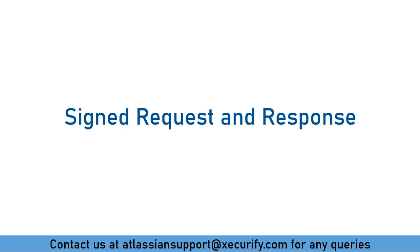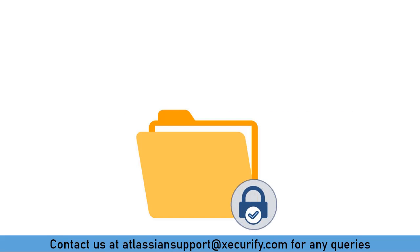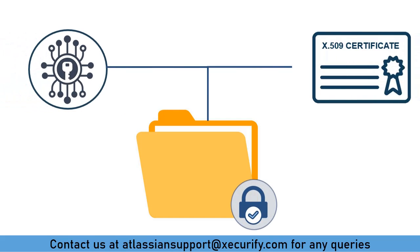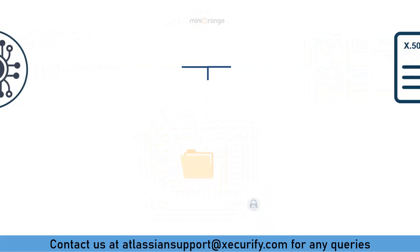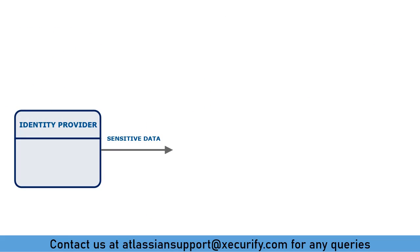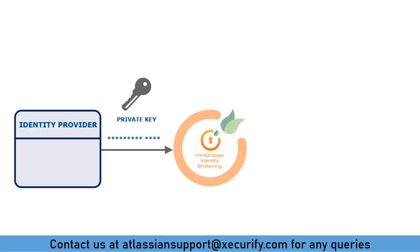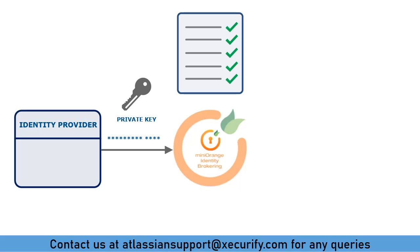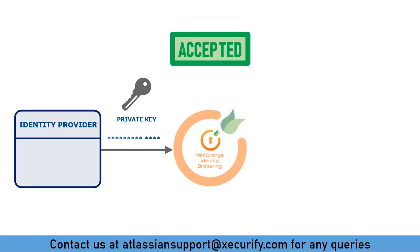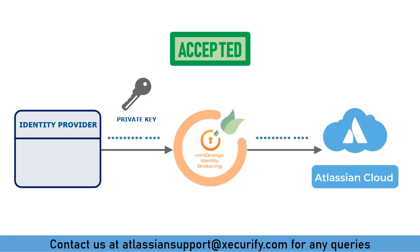Additionally, we will be covering the signed request and response feature of MiniRange Broker. You can protect your data with encryption and signature checks using MiniRange. The sensitive data sent by the identity provider will be encrypted and signed with a key. This data will be verified by MiniRange and accepted only if it passes all security checks. The secure data will then be passed on to Atlassian Access for user login.